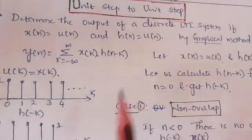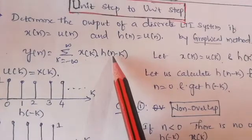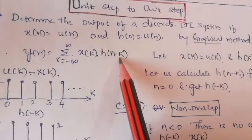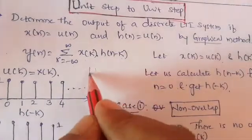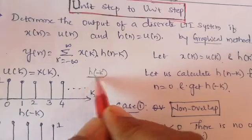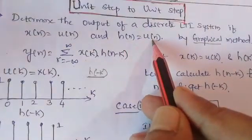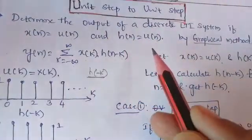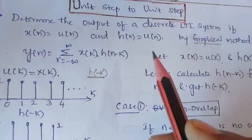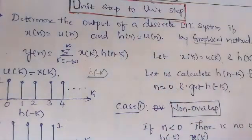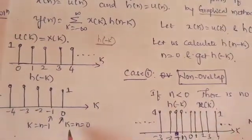Similarly, we need to sketch H(n-k). As discussed in previous videos for the convolution integral, we put n = 0, giving H(-k). H(-k) is the reflection of H(k). Since H(k) is a step signal with amplitude 1 when k ≥ 0, its reflection H(-k) equals 1 when k ≤ 0.